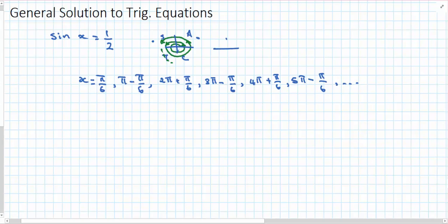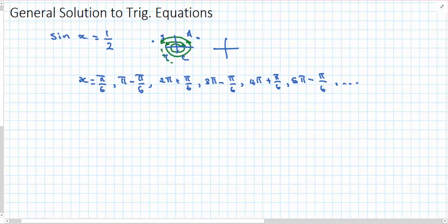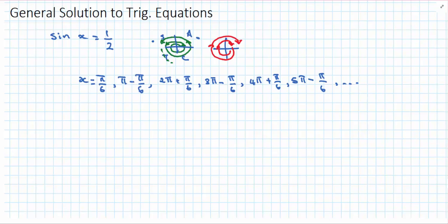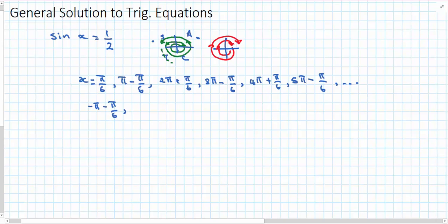Of course we could also go the other way around — going clockwise — and then around again and again. So going in the negative direction they would look like: negative π minus π/6, negative 2π plus π/6, negative 3π minus π/6 and so on. You get the picture.